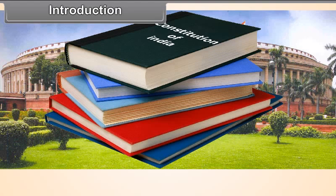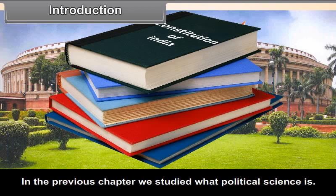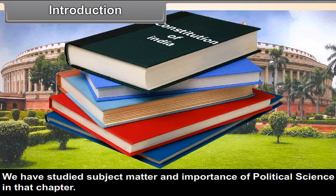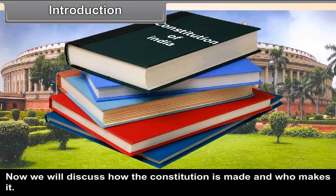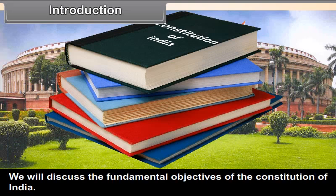Chapter 5: Making of the Constitution. In the previous chapter, we studied what political science is — its subject matter and importance. Now, we will discuss how the Constitution is made and who makes it, and we will discuss the fundamental objectives of the Constitution of India.